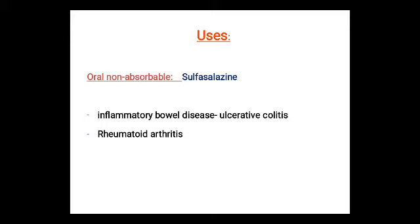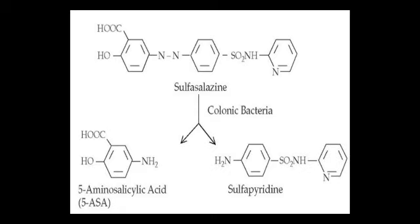Sulfasalazine is an orally given sulfonamide that is not absorbed. It is used in inflammatory bowel disease, ulcerative colitis, and rheumatoid arthritis. After entering the body, it splits into two compounds: 5-aminosalicylic acid and sulfapyridine.